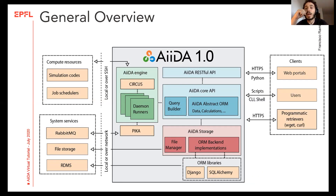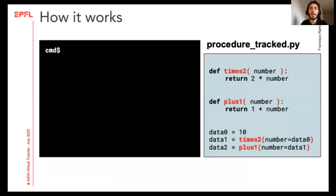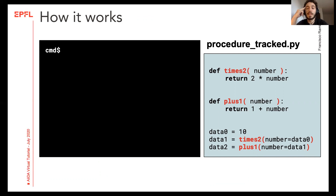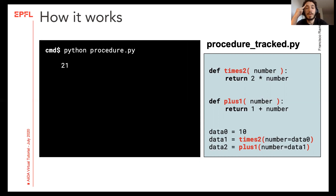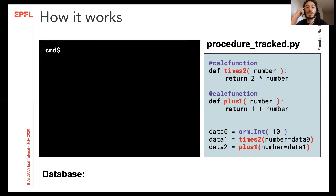Let's take a look at a basic procedure. We start with this initial piece of information — the number 10, stored in our variable data_0. We run two calculations or transformations on it: the first one is to multiply by two, and the second one to add one — a very simple procedure. You can run the script like this and maybe print the result to a file to be used later for other processes, but we have seen before it is very easy to lose track of where this value of 21 came from.